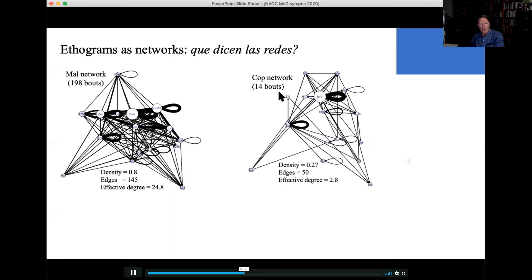The cop network, and this is not due to sampling, because sampling just 14 of these 198 would get exactly the same picture, the cop networks are much less dense. 25% of the possible edges are present. There are only 50 kinds of transitions in the network, and the effective degree, the effective number of edges, is only about three. Bow, bow, bow, bow, very heavy. Neck, neck, neck, very heavy. And all the others effectively adding to one. So three versus 25. So cop bouts, very low effective degree, low density, simplicity. Successful bouts are simpler.